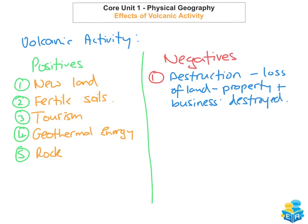The second negative impact of volcanic activity is death. People are killed or badly injured. An example of this would be in Iran in 2003, where over 30,000 people were killed.